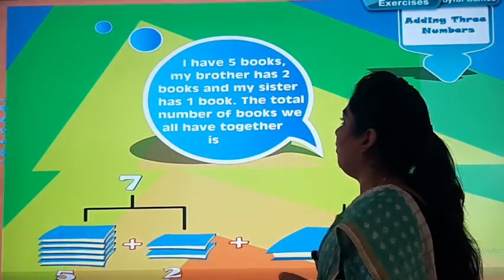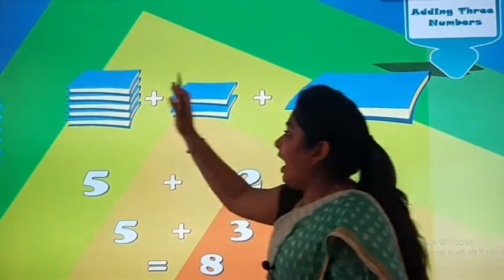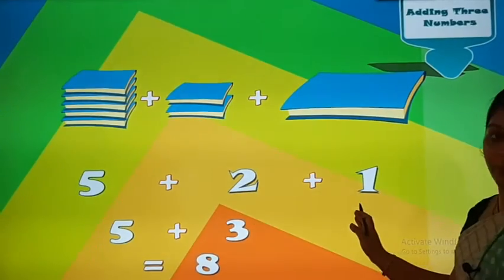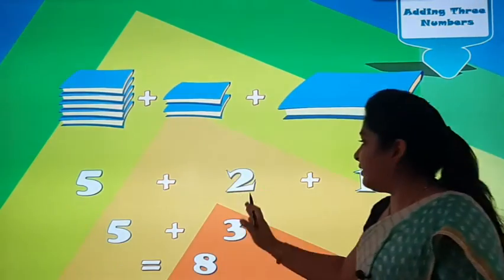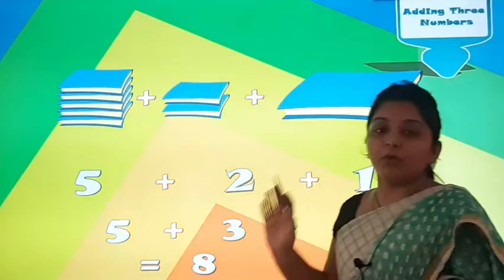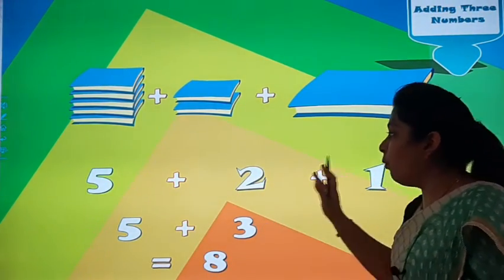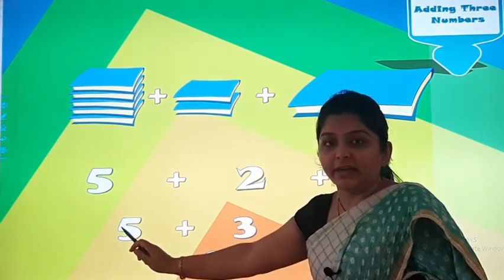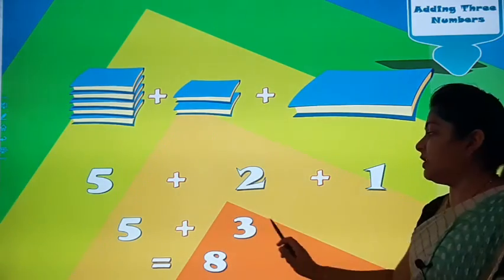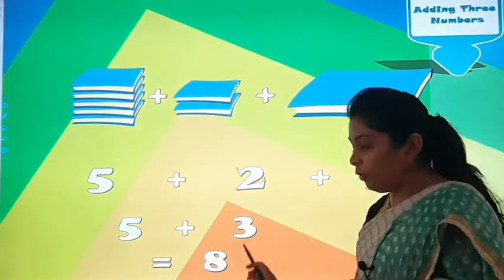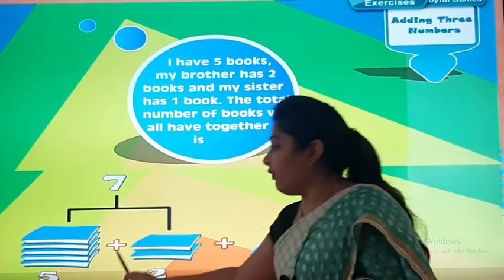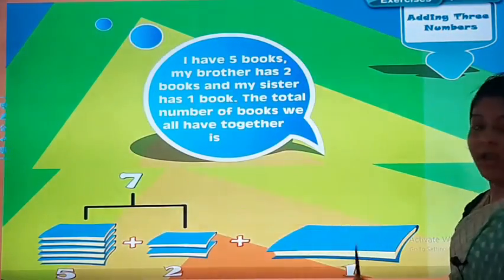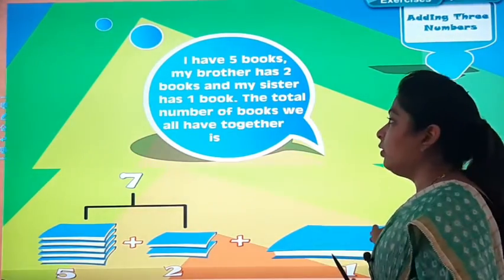There is another way. I have 5 books, my brother has 2 books, and my sister has 1 book. So 5 plus 2 plus 1. You can first add 2 plus 1, which is 3. The remaining number is 5. So 5 plus 3 equals 8. You can do it this way, or you can first add 5 plus 2 and then add the last number. It is up to you.